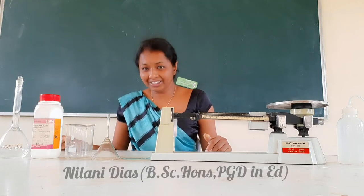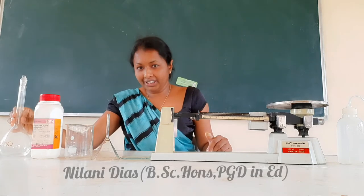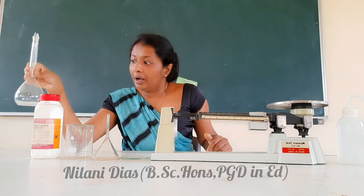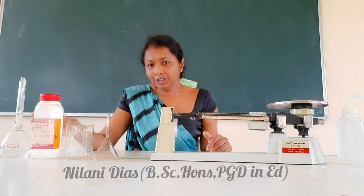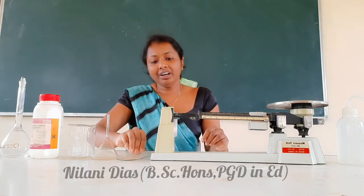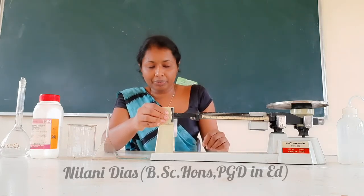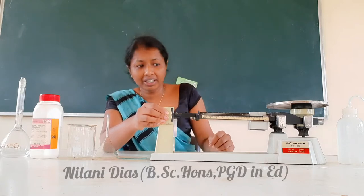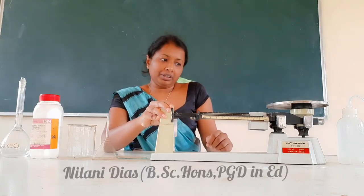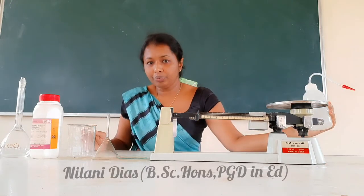Let's see what chemicals and equipment are needed. For this practical, we need a volumetric flask with a capacity of 250 milliliters, sodium carbonate, a beaker, a funnel, a wash glass or operating glass, and a balance. We can use a triple beam balance, four beam balance, or a chemical balance. We also need a wash bottle.